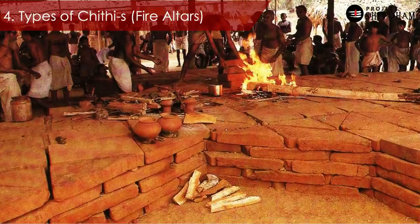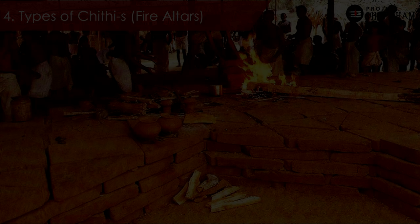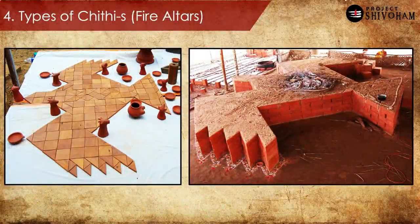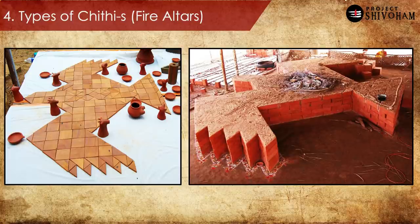Sulbhasutras very well define the guidelines and geometric principles behind baking these bricks — so well that they even take into account the losses that occur in the shape of a brick once it gets dried and baked. When you make a brick it is wet; when you bake it the shape could slightly alter. So the actual dimensions when wet versus after hardening could be different. Sulbhasutras even account for those specifics.